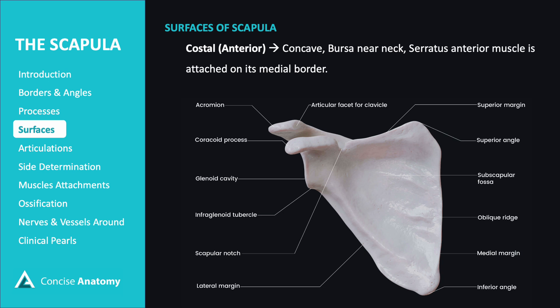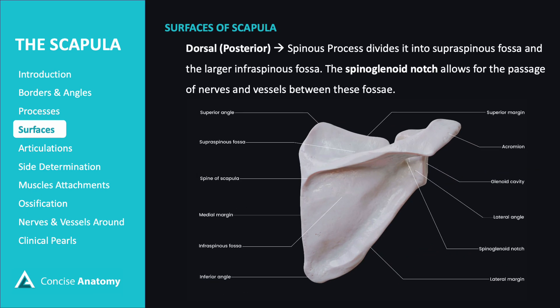The scapula has two surfaces: the costal or anterior surface and the dorsal or posterior surface. Its costal surface is concave forward and features bony ridges for the attachment of the subscapularis muscle. The serratus anterior muscle attaches along its medial border and inferior angle. Its dorsal surface is convex and features a spinous process that divides it into the smaller supraspinous fossa and the larger infraspinous fossa. The spinoglenoid notch allows for the passage of nerves and vessels between these fossae.